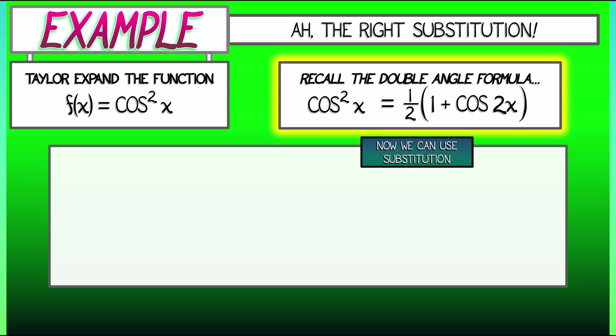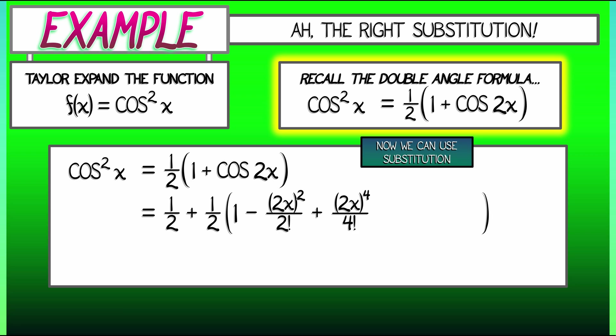In this case, this is going to allow us to say, what? Cosine squared x. That's 1 half times quantity 1 plus cosine 2x. I'm going to distribute that 1 half out. So I get 1 half plus 1 half times what I get when I substitute 2x into cosine. What is that? That's going to be 1 minus quantity 2x squared divided by 2 factorial plus quantity 2x to the 4th divided by 4 factorial minus quantity 2x to the 6th over 6 factorial. Keep going.